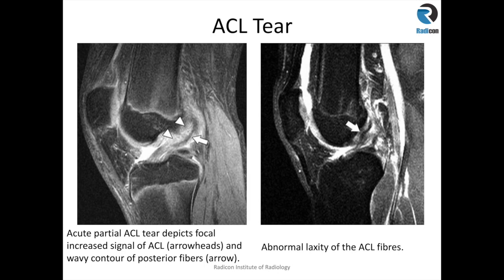Here again there is wavy contour or abnormal laxity of the ACL, and there is some soft tissue reaction posteriorly. I suspect this is a case of a chronic ACL injury where there has been previous damage, and now the ACL has a scarred and lax appearance.